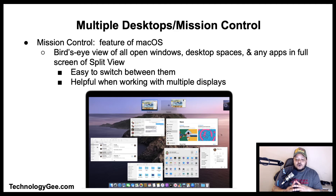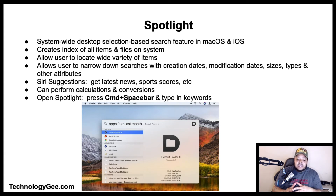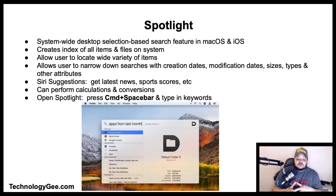Next we have Spotlight, a system-wide desktop search feature in macOS and iOS. Spotlight creates an index of all items and files on the system, allowing users to quickly locate documents, pictures, music, applications, and system preferences. It also allows searching specific words in documents and web pages in a browser's history or bookmarks.